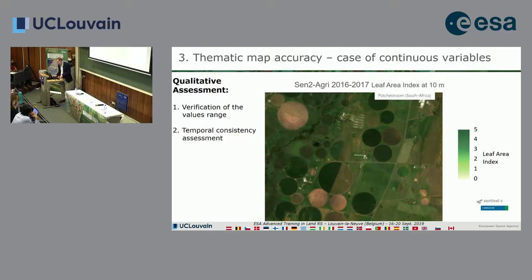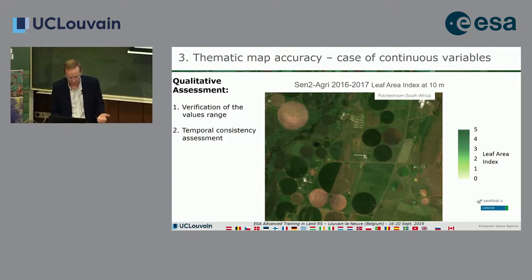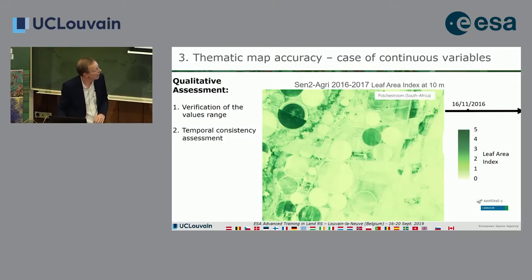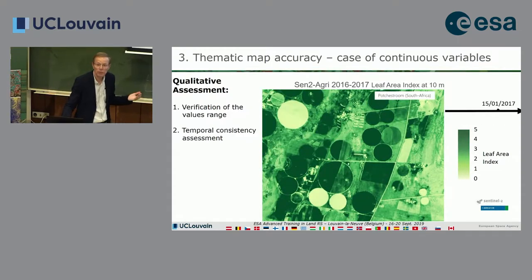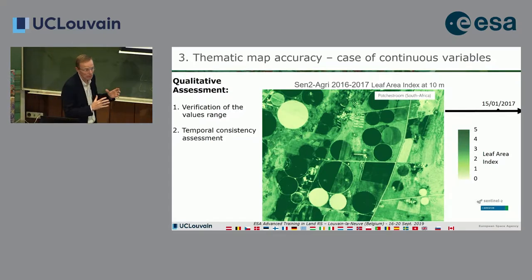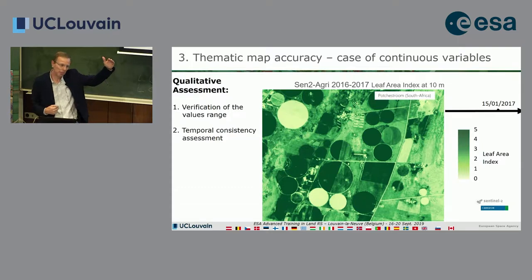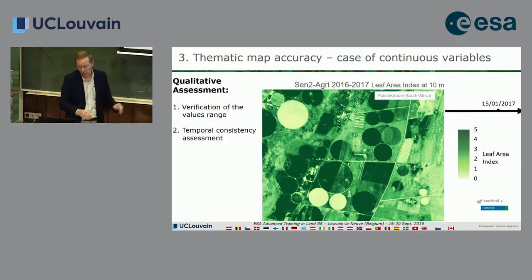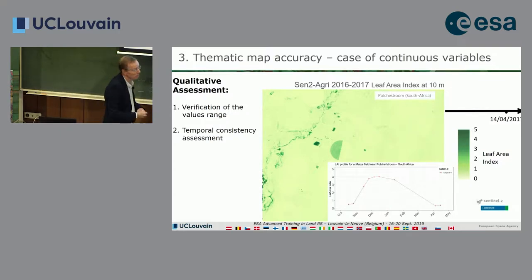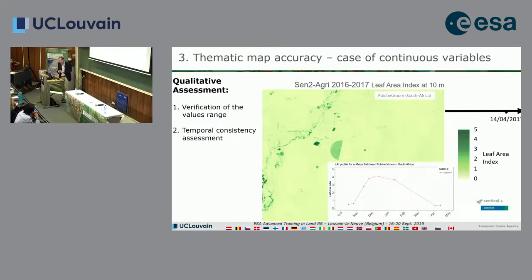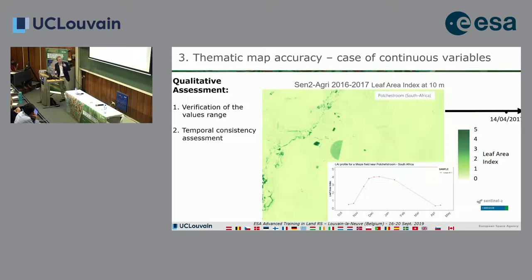Here is a typical output from MARS/VAIS—a temporal profile of LAI. The first thing to do is verify the range of values: make sure you don't have a negative LAI or a LAI of 12. Second, do a qualitative temporal consistency check—how consistent is the profile with what you expect? These two qualitative assessments should be done before any mathematics, because coding systems emphasize quantitative figures and we forget to look at the qualitative first.